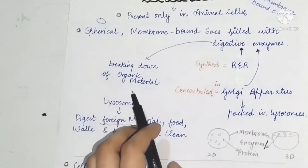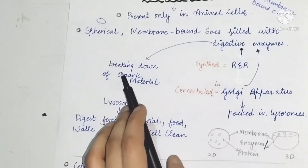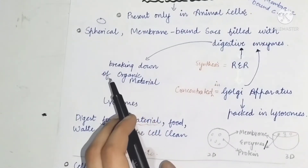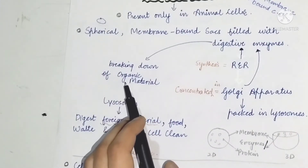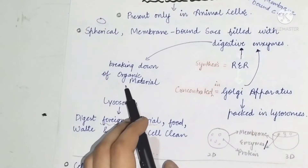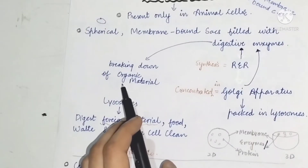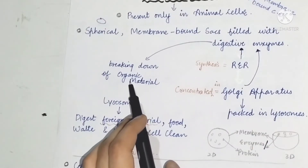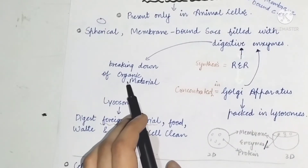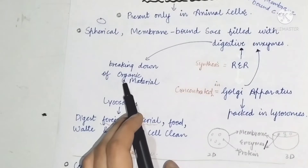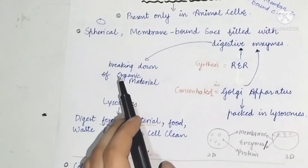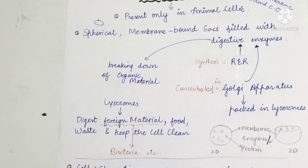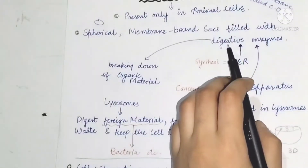The digestive enzymes bring down organic materials. These are organic materials — minerals and nutrients — and the digestive enzymes help in breaking them down.